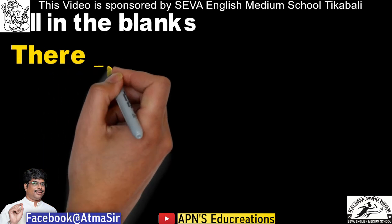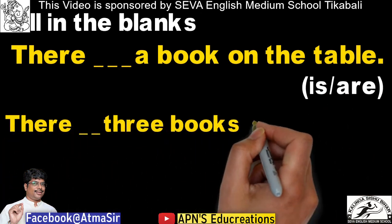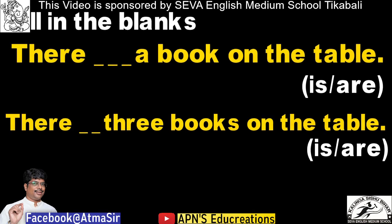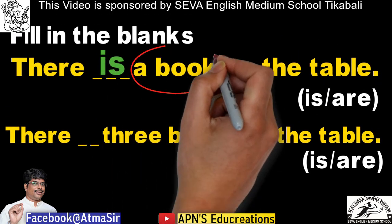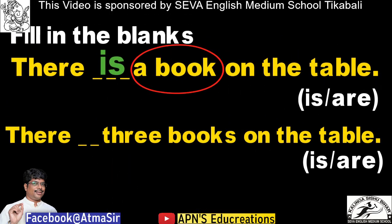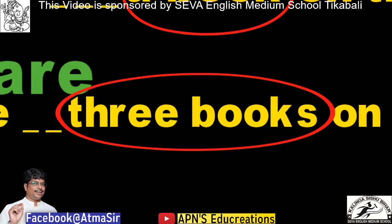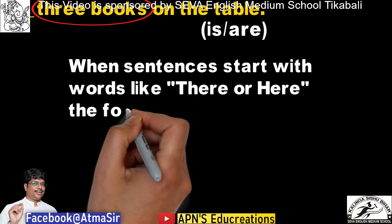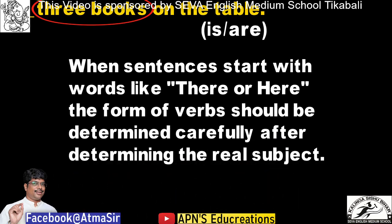First: 'There ___ a book on the table.' Options: is or are. Second: 'There ___ three books on the table.' Options: is or are. In the first question the correct option is 'is' because the subject 'a book' is in singular form. In the second sentence the answer is 'are' as the subject is 'three books.' The bottom line: when sentences start with 'there' or 'here,' the form of the verb should be determined carefully after identifying the real subject.